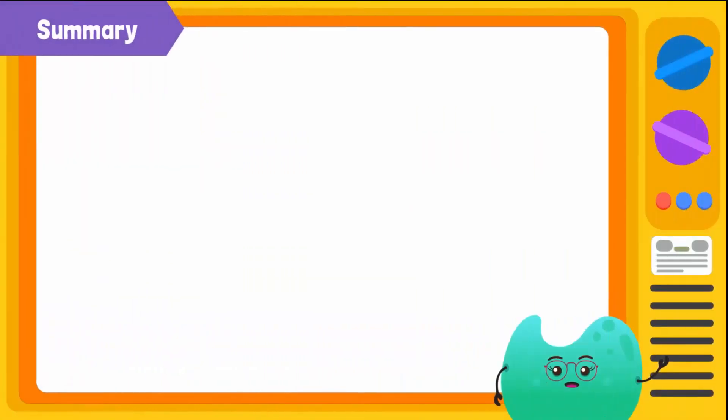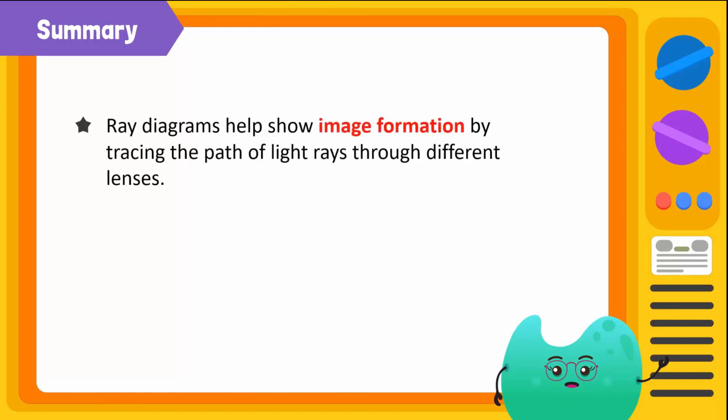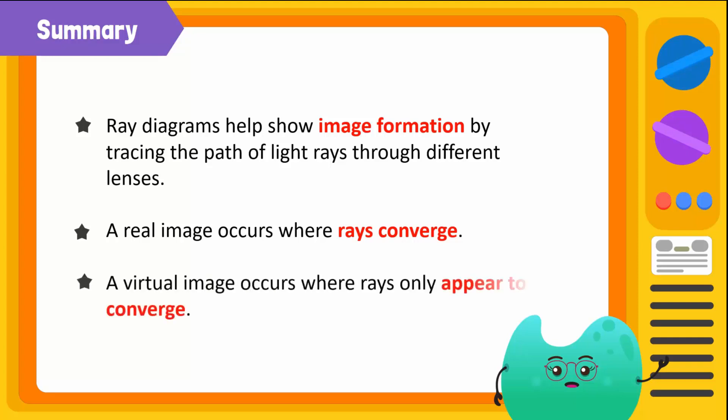Let's summarize what we have learned in this video. Ray diagrams help show image formation by tracing the path of light rays through different lenses. A real image occurs where rays converge. A virtual image occurs where rays only appear to converge.